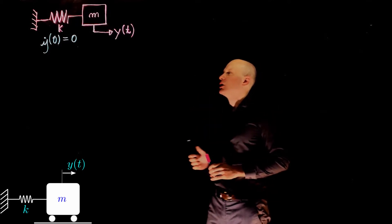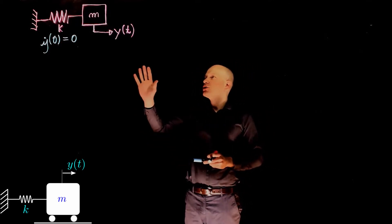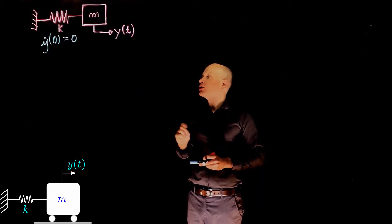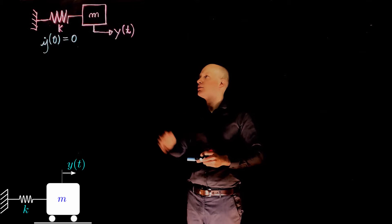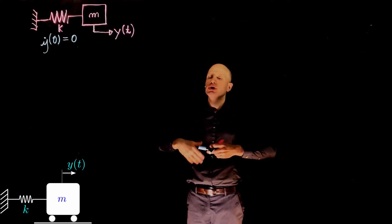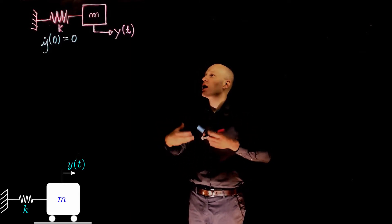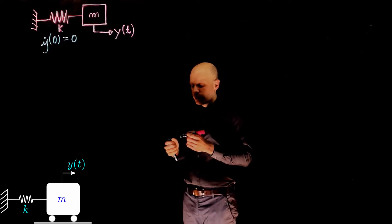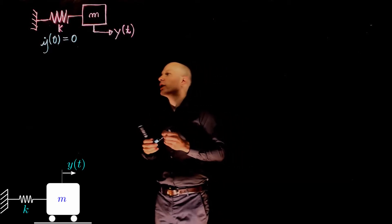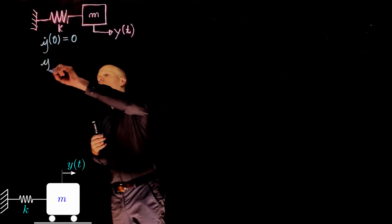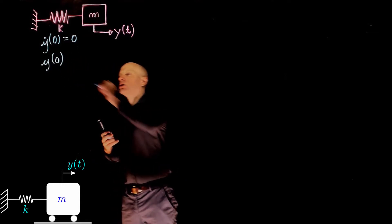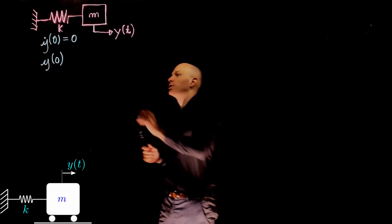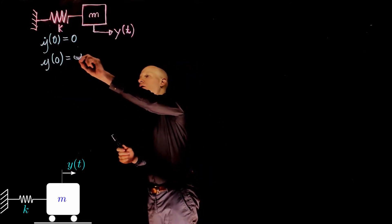The second important piece of information is that the mass is released when the spring is stretched by alpha units. So the initial stretch of the spring is alpha at time equals zero. When the mass is released, the spring is stretched. We can write that the initial displacement y at time t equals zero equals alpha.